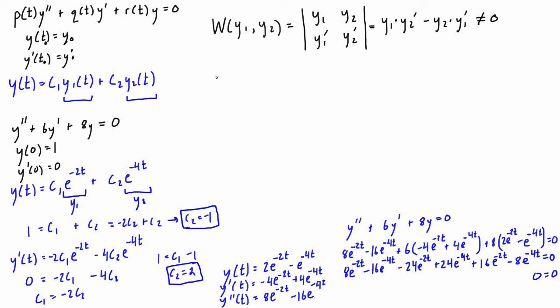The second part here is now dealing with the Wronskian. Let's write out y1, y2, y1', and y2'. We have y1 = e^(-2t), y2 = e^(-4t), and then y1' is just simply -2e^(-2t), and y2' is just equal to -4e^(-4t).